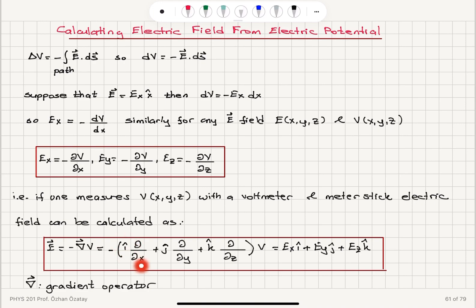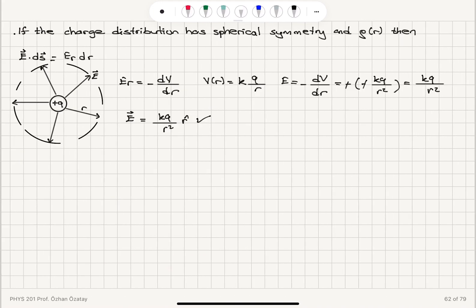That's minus parentheses i-hat del del x plus j-hat del del y plus k-hat del del z. If we have a radial distribution, spherical symmetry in the problem, then we can write electric field radial component as minus dV dr.